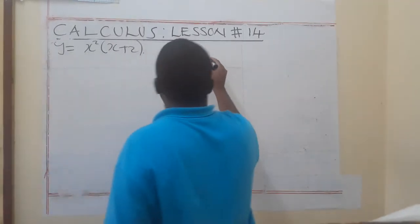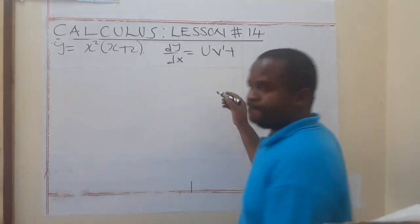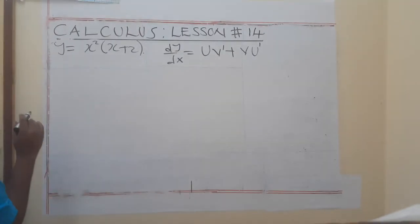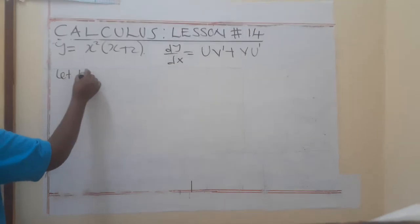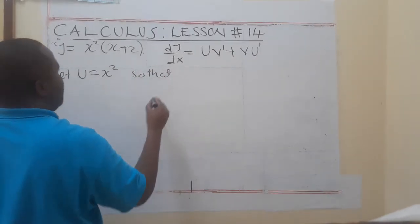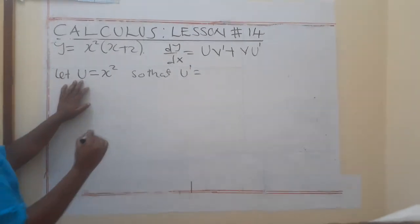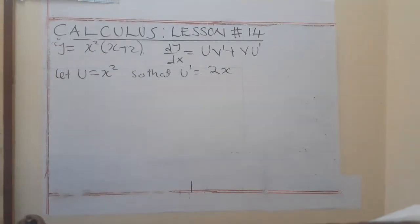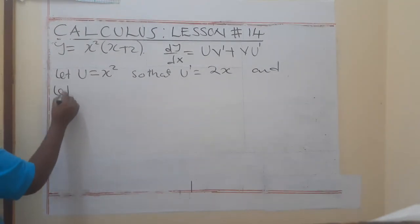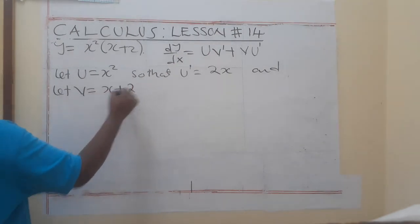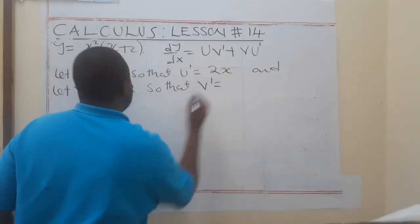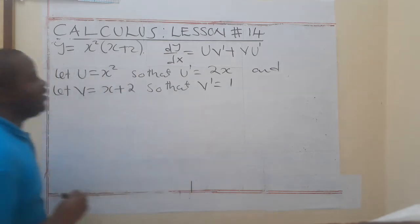dy/dx equals u·v-prime plus v·u-prime. Since this is our function, we are going to say: let u be equal to x². So that means u-prime, when I differentiate this, I get 2x. Let v be equal to x + 2, so that v-prime is equal to — when I differentiate this — the answer will just be 1.